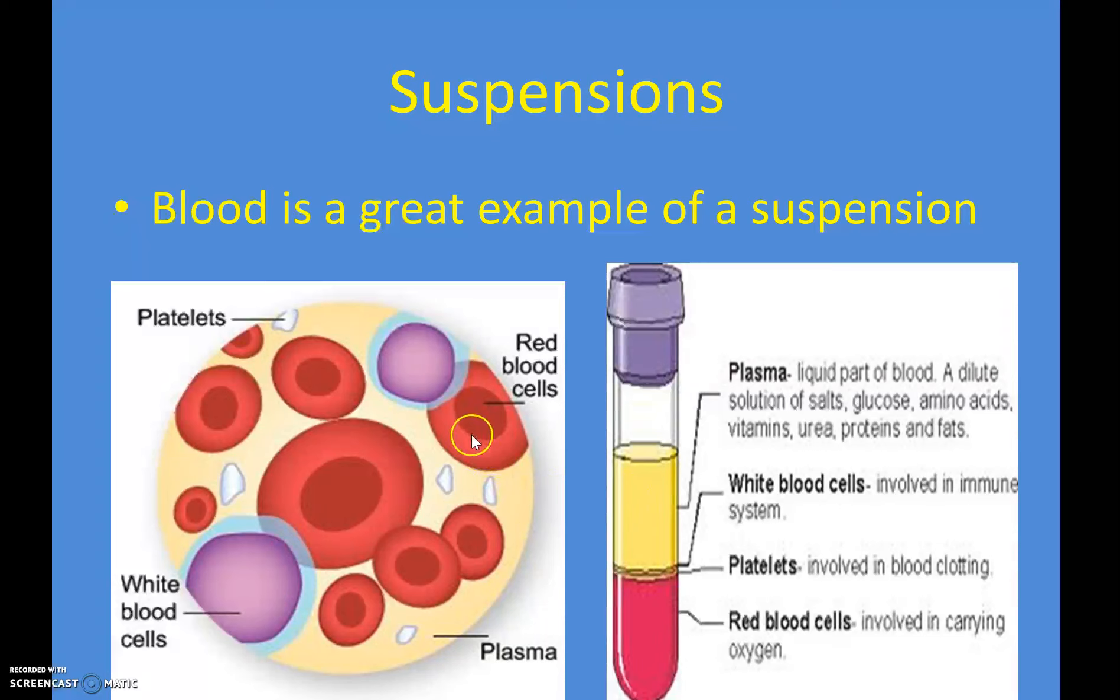Our blood has these different cells floating in it, so blood is a suspension. There's red blood cells, white blood cells, little parts of cells called platelets, all floating in that watery base. So they're not dissolved, they're not equal like salt water would be, but they're suspended. They're floating in that watery base of the blood that we call plasma.